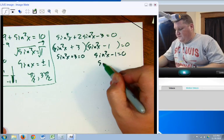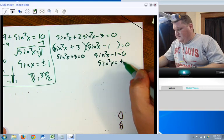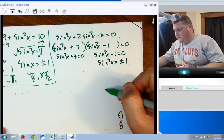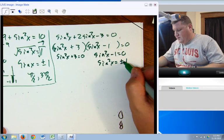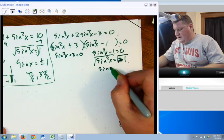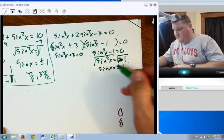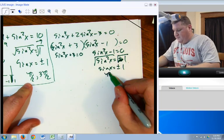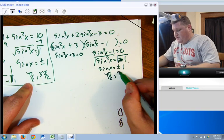All right, so sine squared x equals plus or minus 1. I'm sorry, plus 1. Then square root it, you're going to have sine x equals plus or minus 1. We already figured out that that's pi over 2, 3 pi over 2.